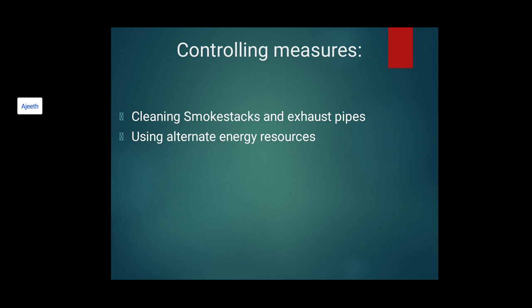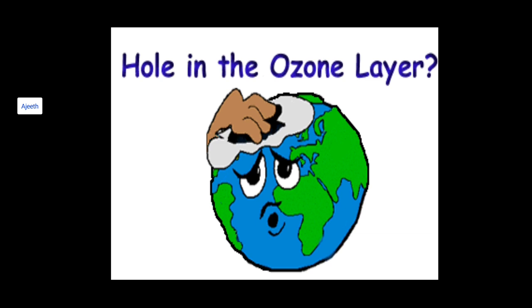For controlling acid rain, cleaning of smokestacks and exhaust pipes can be done. Using alternate or renewable energy resources is important — more and more alternative energy sources are being researched because burning fossil fuels is a main cause of acid rain. The next topic is ozone depletion — there is a hole in the ozone layer.